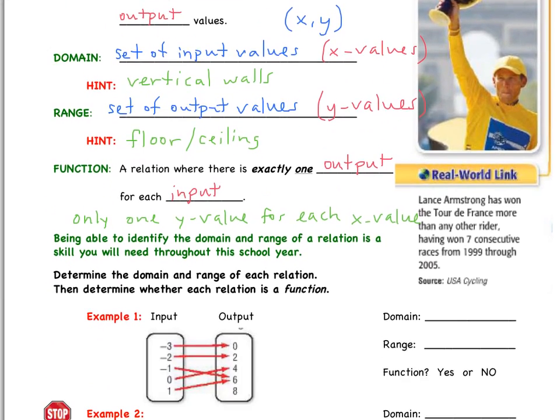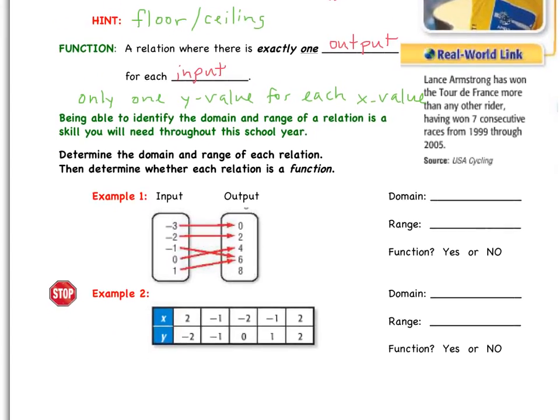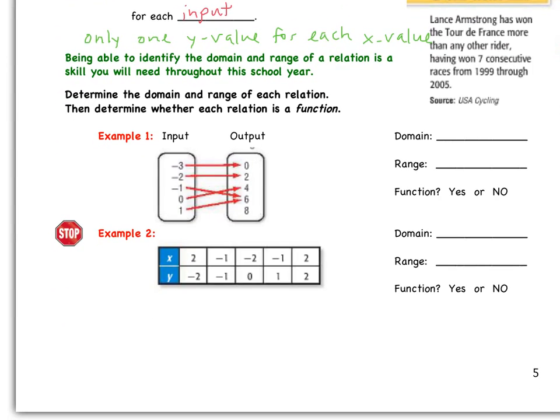So let's take a look at a couple examples here that determine whether it is a function, or determine our domain, range, and whether or not we're dealing with a function. To determine the domain and range, remember, we have to identify the input and the output values. In example one, we've got a column of input values, we've got a column of output. Remember our definition of domain. Domain is the input values.